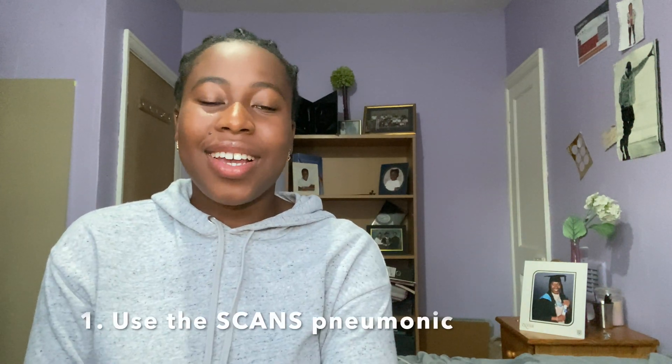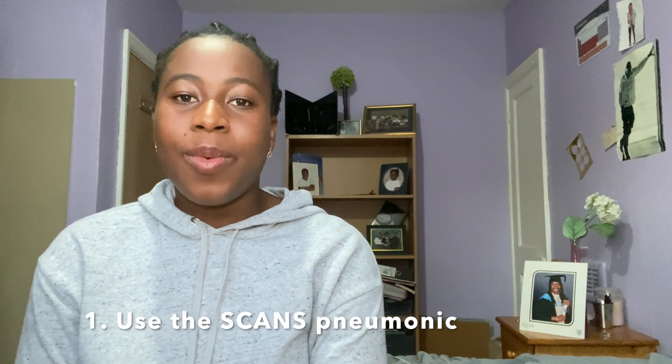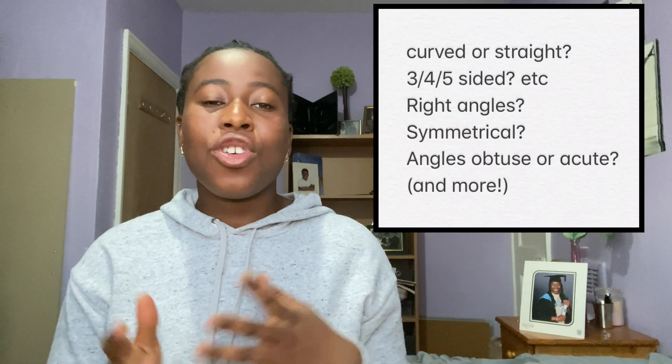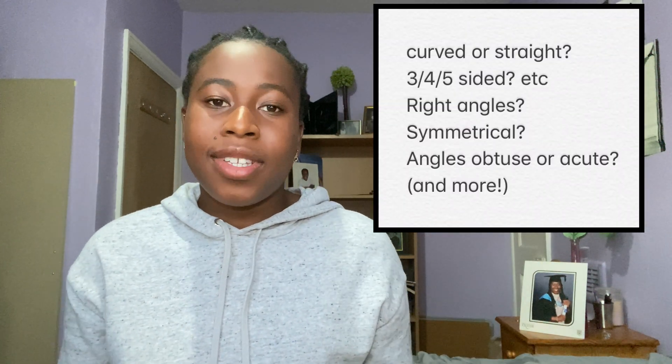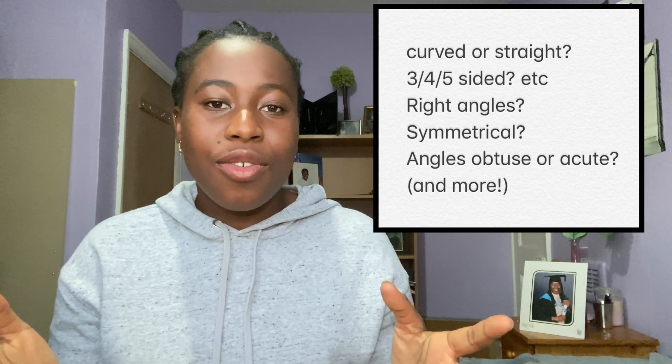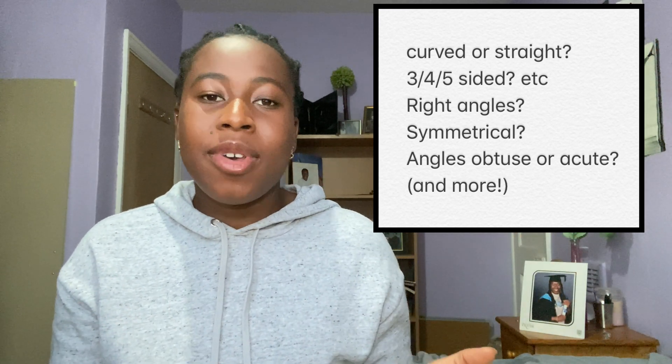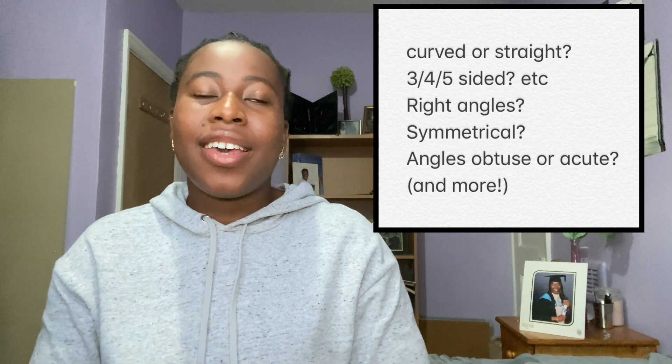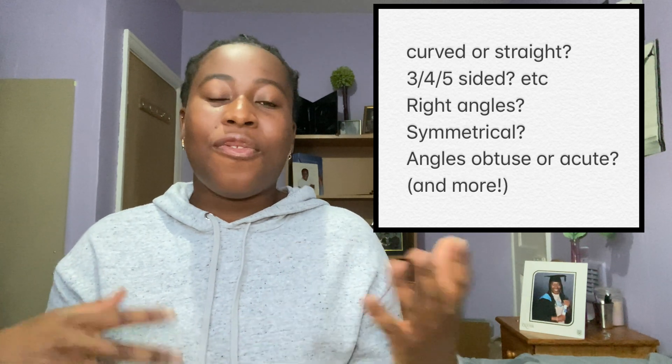Using the SCANS mnemonic is so vital. This is a very good starting point that you can build up on when you are revising. The S stands for shape — what shape is in the box, what shape is in set A, what shape is in set B, what shape is in the series? Is it a curved shape, a straight-edged shape, a four-sided shape, or a three-sided shape?